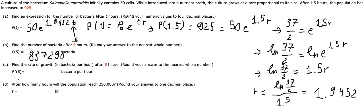Next, if we want to find the rate of growth at t = 5, we do the first derivative of this expression. We will have 50 multiplied by 1.9452 times e^(1.9452t).